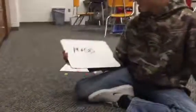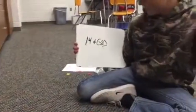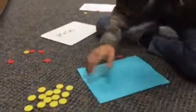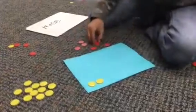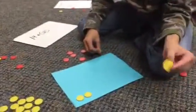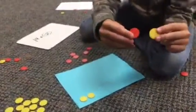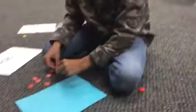Our first problem is positive 14 plus negative 8. This is how you lay it out. You do positive 14 first. These are our positive chips and these are our negative. The reds are negative, yellow is positive.